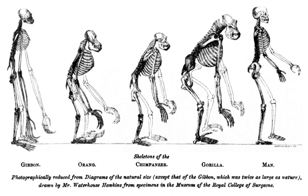Chapter I: On the Natural History of the Man-Like Apes, p.156. This contains a summary of what was known of the great apes at that time. Chapter 2: On the Relations of Man to the Lower Animals, p57-112. This chapter and its addendum contained most of the controversial material, and is still important today.